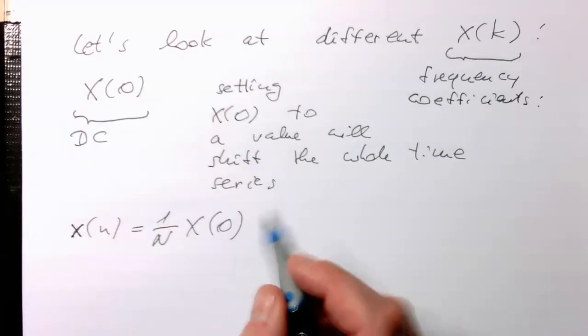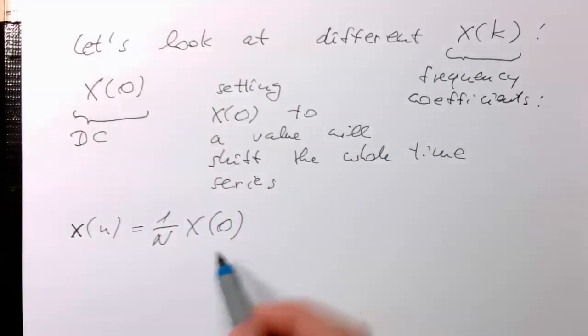And so with that, if we are setting x of 0 to n for example, then this x of n will be shifted by one unit upwards.